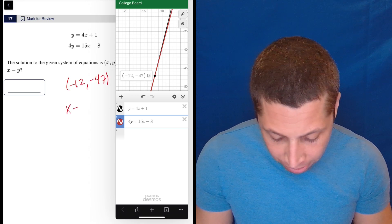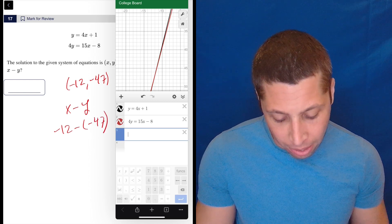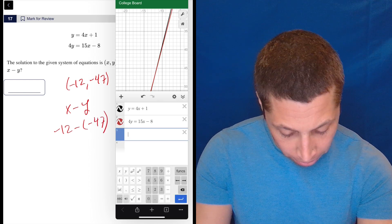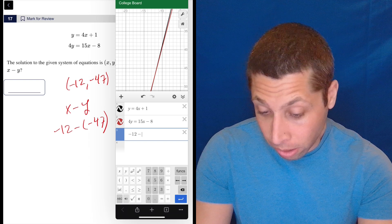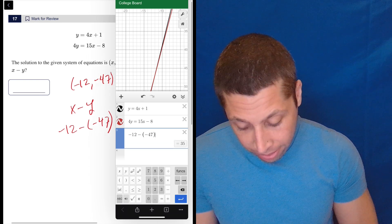And so we need X minus Y. So that's negative 12 minus negative 47. So don't mess that up. And then since I've already got Desmos open, negative 12 minus negative 47 is 35 and that's it done.